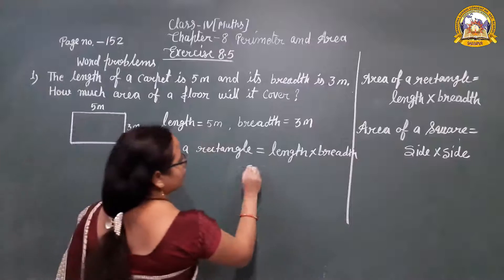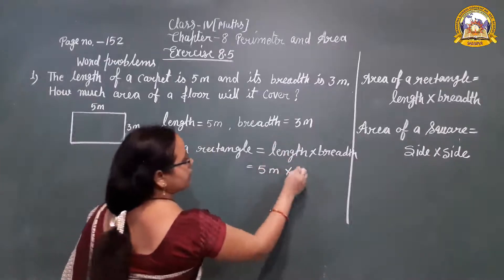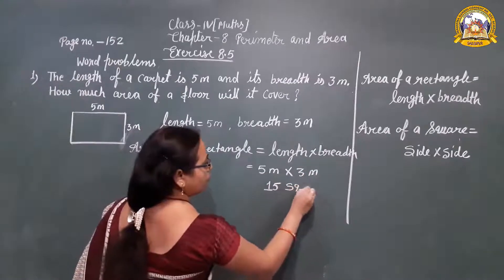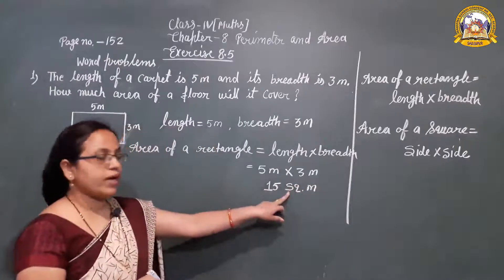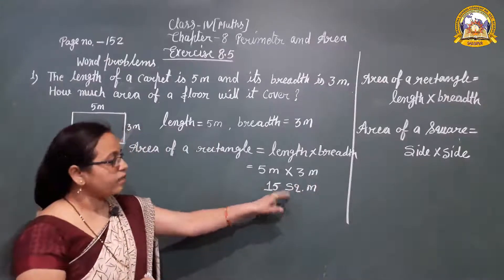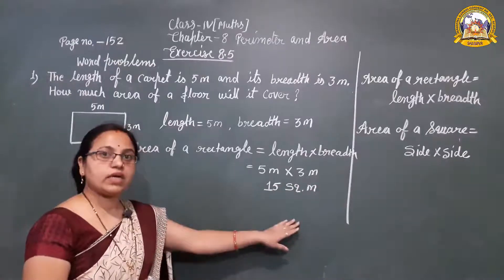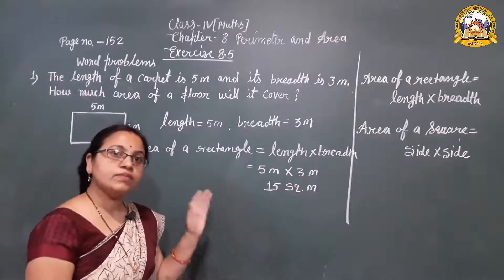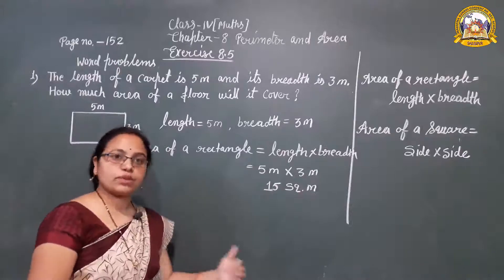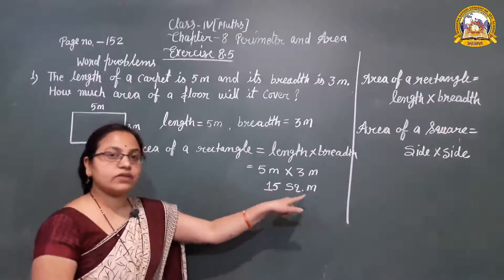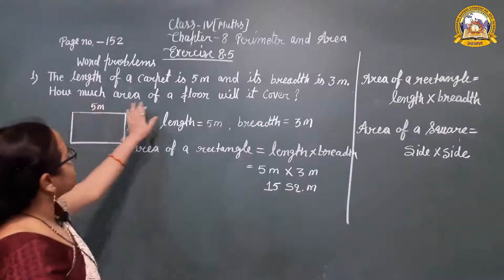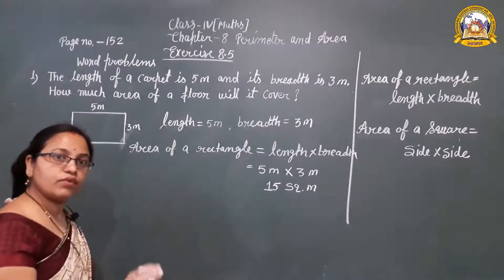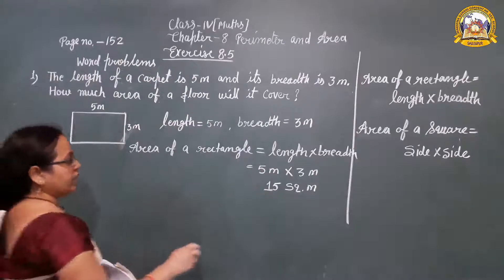The length is 5 meters and the breadth is 3 meters. So 5 times 3 equals 15 square meters. We use 'square' because we are finding area. So the carpet will cover 15 sq meter area of the floor. That is the answer to this question.